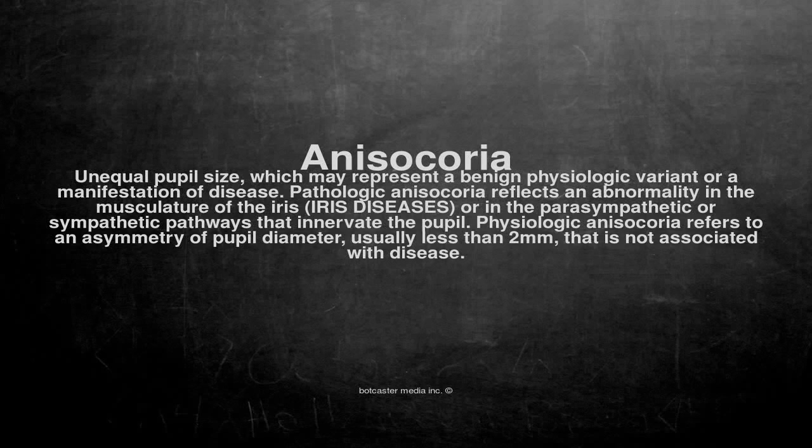Unequal pupil size, which may represent a benign physiologic variant or a manifestation of disease. Pathologic anisocoria reflects an abnormality in the musculature of the iris, iris diseases, or in the parasympathetic or sympathetic pathways that innervate the pupil.